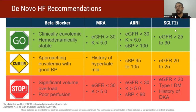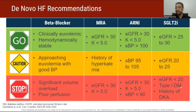Similarly for SGLT2 inhibitors, you have a bit more liberty — even with GFR less than 30 you can start, but be very cautious below 20 to 25. Potassium is not a concern with SGLT2i, but if your patient is type 1 diabetic, has a GFR less than 5, or a history of diabetic ketoacidosis, do not give it.